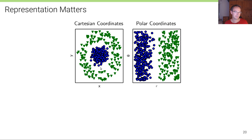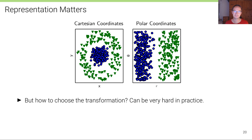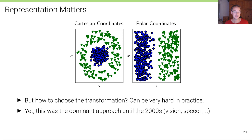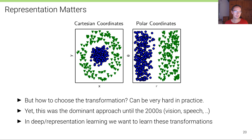Here's another example: a dataset that cannot be linearly separated in Cartesian coordinates, but if we represent it using polar coordinates — with radius r and angle θ — we can clearly find a linear decision boundary. But how should we choose the transformation? This can be very hard in practice if done manually, and manual feature design was the dominant approach until the 2000s in vision and speech. In deep learning, or representation learning, we want to learn these representations from the data itself.